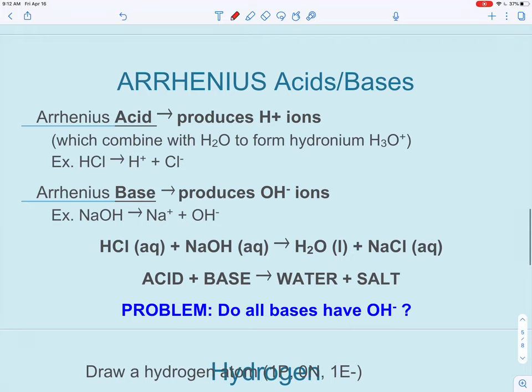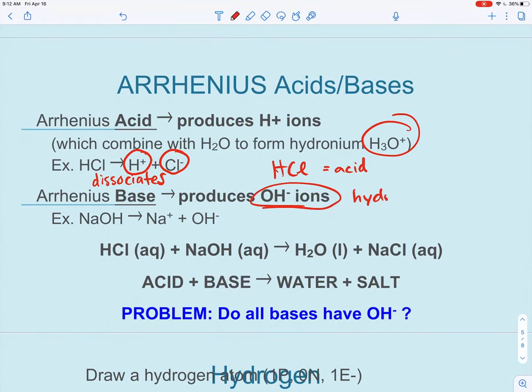But the way he talked about acids and bases is this. He said that acids will produce hydrogen ions, eventually those combined with water to form hydronium. And so HCl here, when it dissociates, which means to separate, it's going to form two ions. So this hydrogen ion and this chlorine ion. So for him, HCl was an acid because it formed hydrogen. His definition of a base was something that produces hydroxide ions. Remember, OH is hydroxide. So something like NaOH, because it has that hydroxide, is going to be a base.